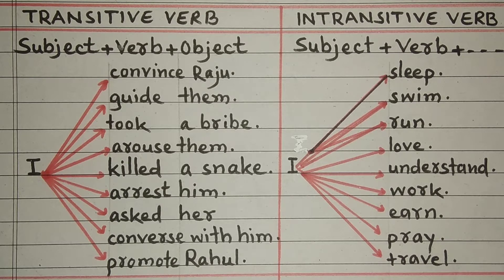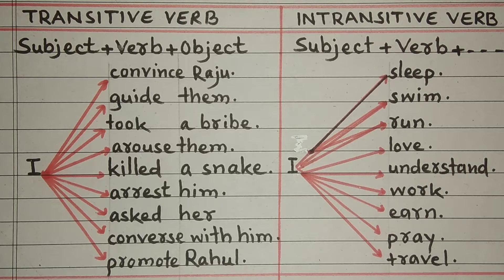Mein bahut zyada kamaata hoon — I earn too much. Mein bahut ibadat karta hoon — I pray too much. Mein poore Bharat ka safar karta hoon — I travel throughout India. Dear students, hamne dekha hai ke in verbs ko object ki zaroorat nahi padti.